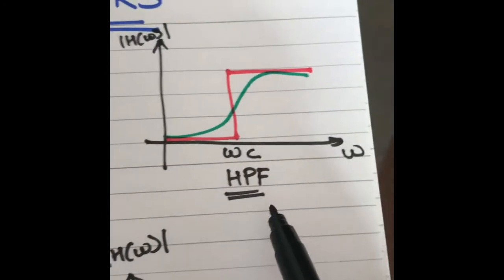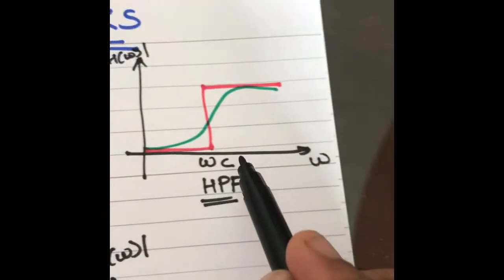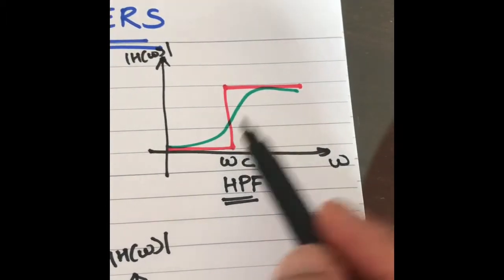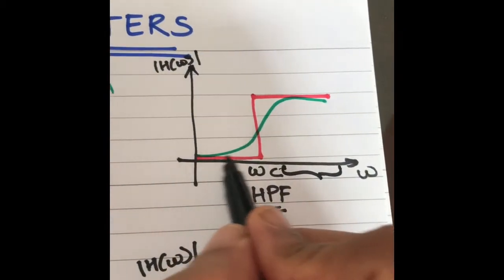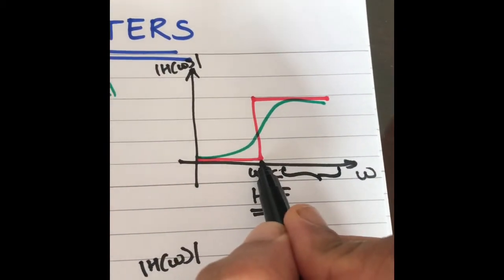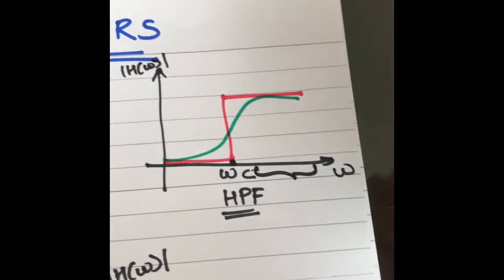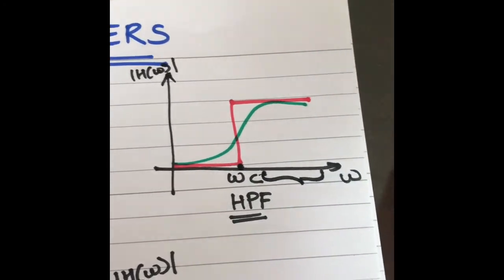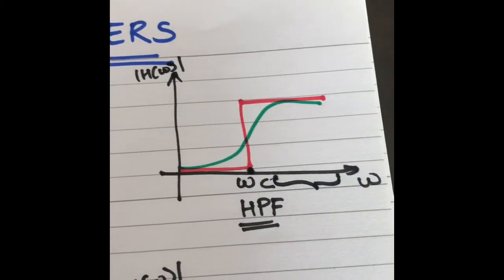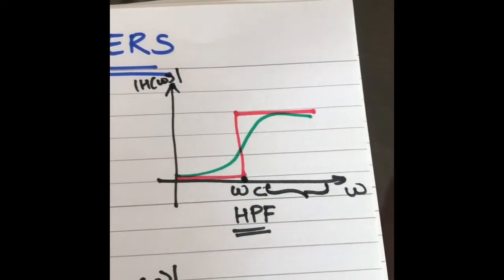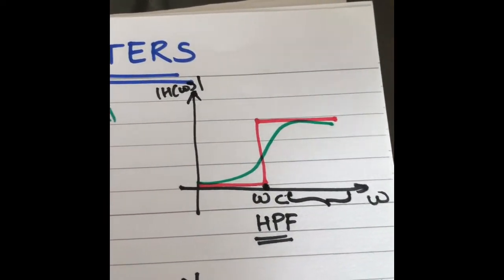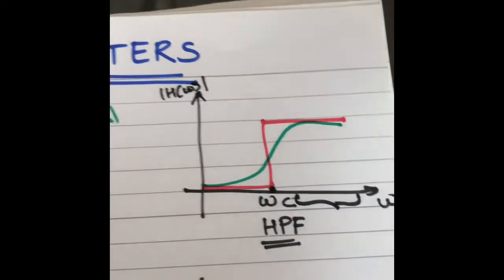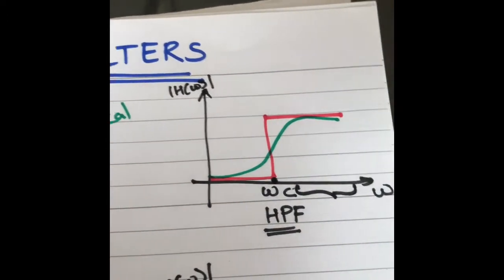A high pass filter is the reverse of a low pass filter. It passes all frequencies above the cutoff frequency and highly attenuates frequencies below the cutoff frequency. Depending on your application, whether you want to reject frequencies below or above a certain frequency, you choose a low pass or high pass filter and design its cutoff frequency accordingly.